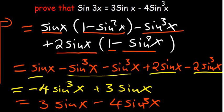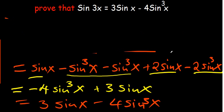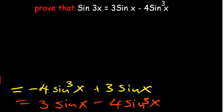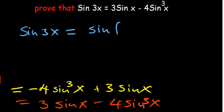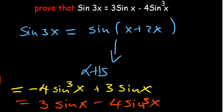We've shown, starting from the left-hand side sin(3x), by expressing it as sin(x + 2x) and applying substitutions, that the left-hand side is equivalent to the right-hand side. Hence we've proven that sin(3x) = 3sin(x) - 4sin³(x).